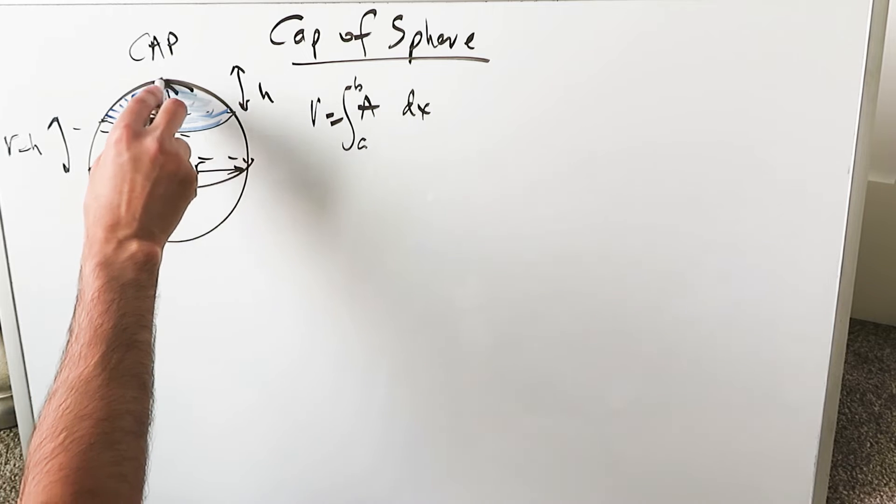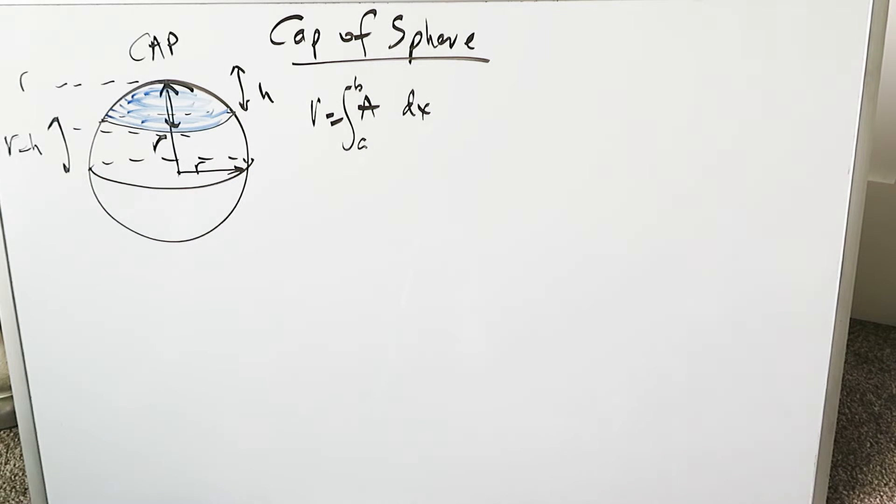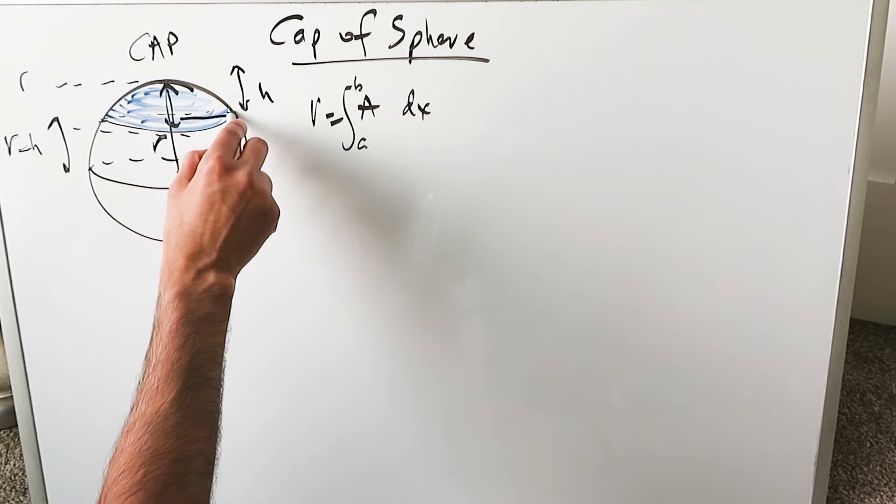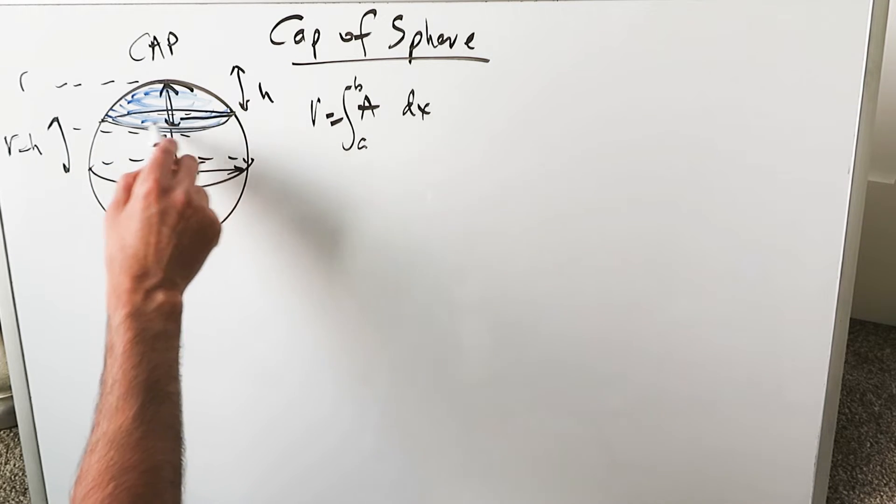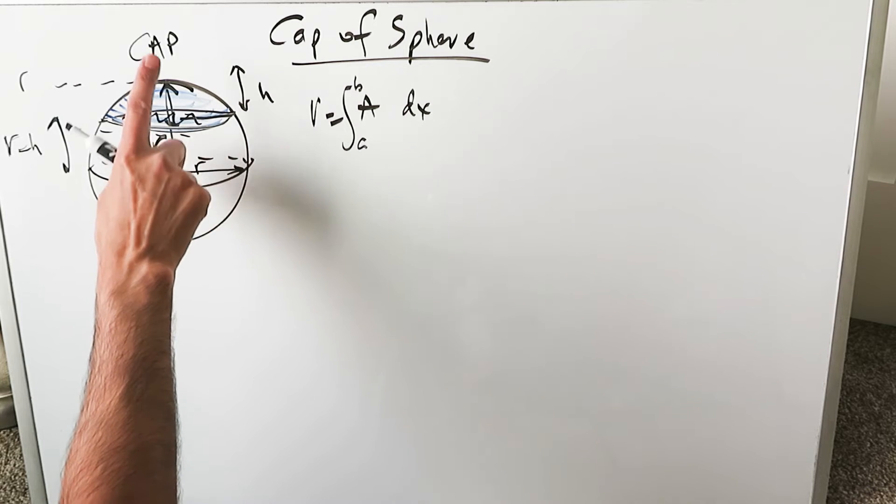Where did the cap start? It started R minus H units away from the center. Where did the cap end? It went all the way up to R units away from that center. Those will be our limits. We have to determine what the cross-sectional slices are because they are being integrated in terms of their area from this point upwards.